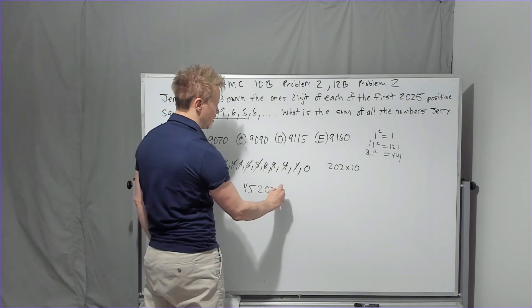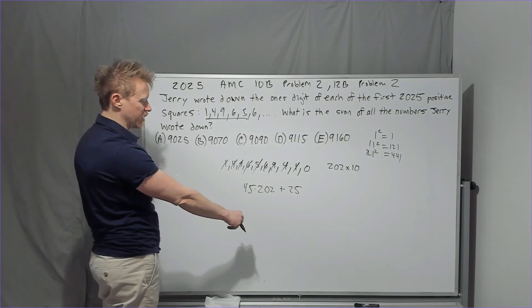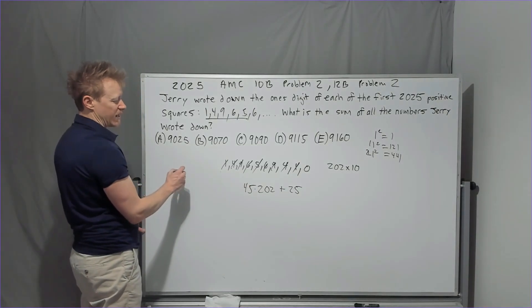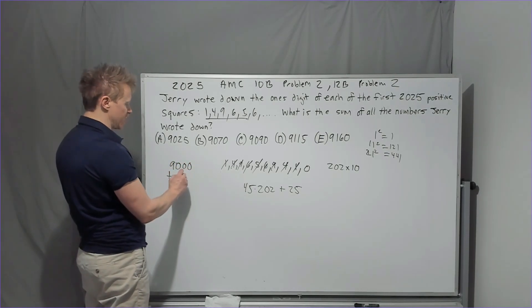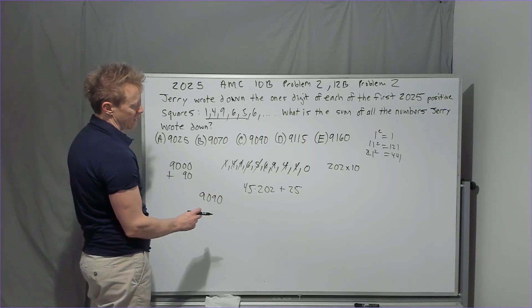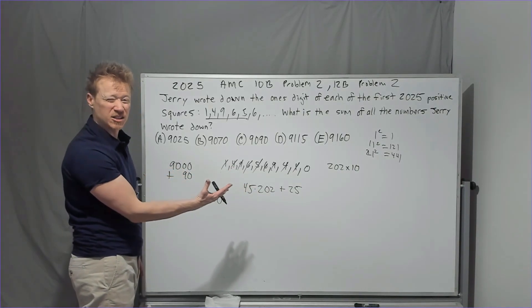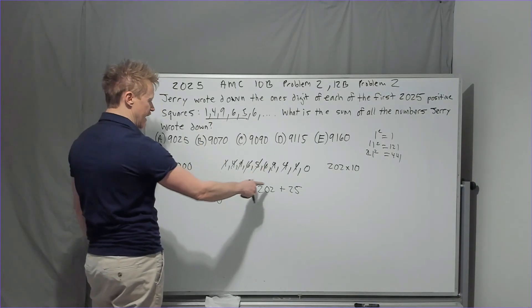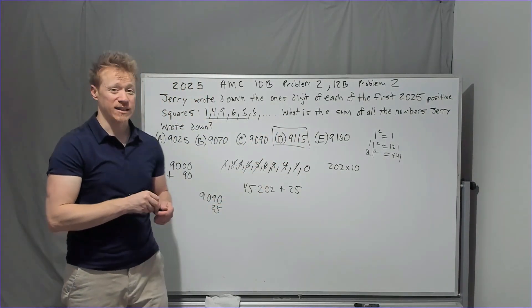So we're going to get 45 times 202 plus 25. The way that I would want you to do this is to split it in your mind to 200. And so if you do 200 times 45, it's like, two times 45 is 90 times a hundred. It's 9,000, right? And then plus two times 45 is 90. So you have 9,090. Yeah, you could also make it 90 times 101, which is great. Also, lots of little things that you can do like that. 90 times 101, of course, is 909 with a zero. And then you'll add 25 to end up at 9,115. Let's get to problem three.